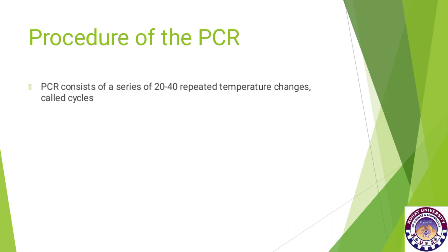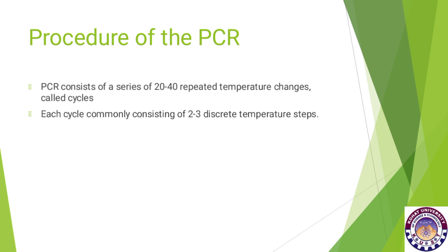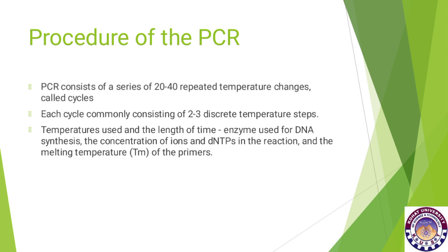The procedure of PCR involves 20 to 40 repetitive temperature changes, and each cycle commonly consists of two to three discrete temperature steps. Key factors include temperatures used, length of time, the enzyme used for DNA synthesis, concentration of ions and DNA in the reaction, and the melting temperature of the primers, which is important when primers anneal to the target DNA.